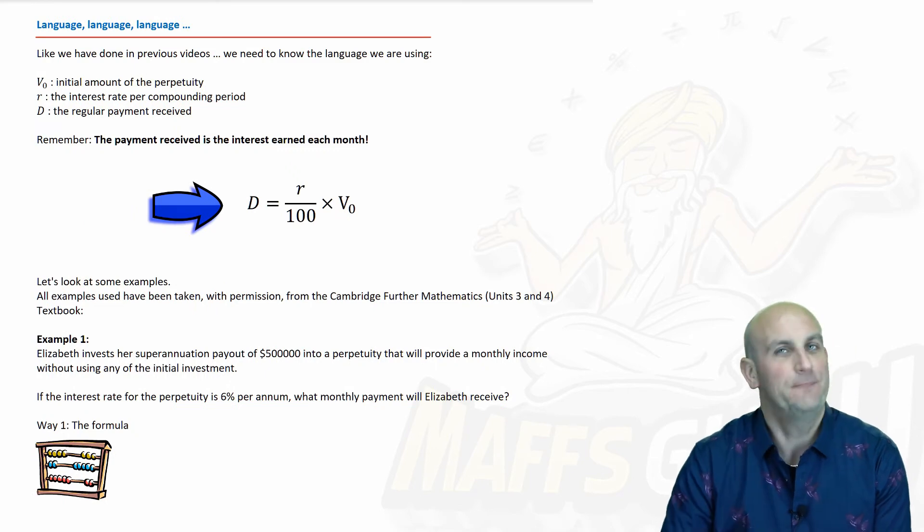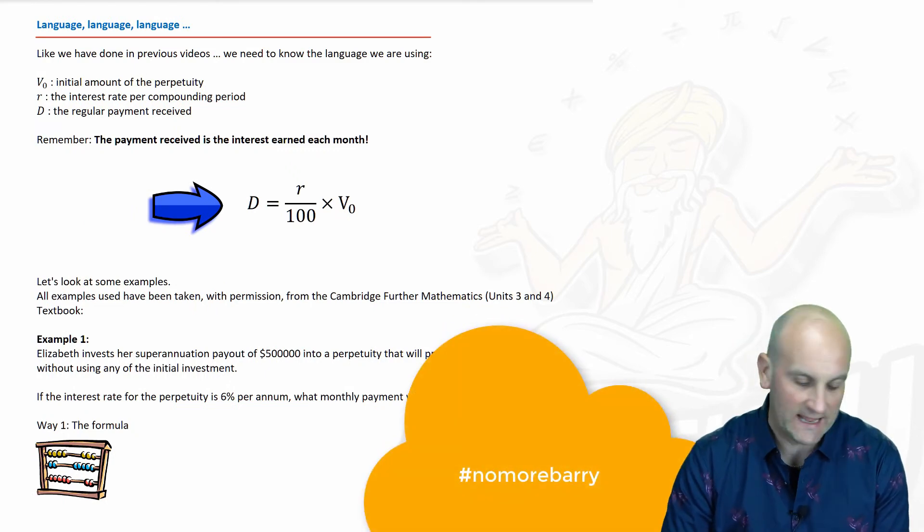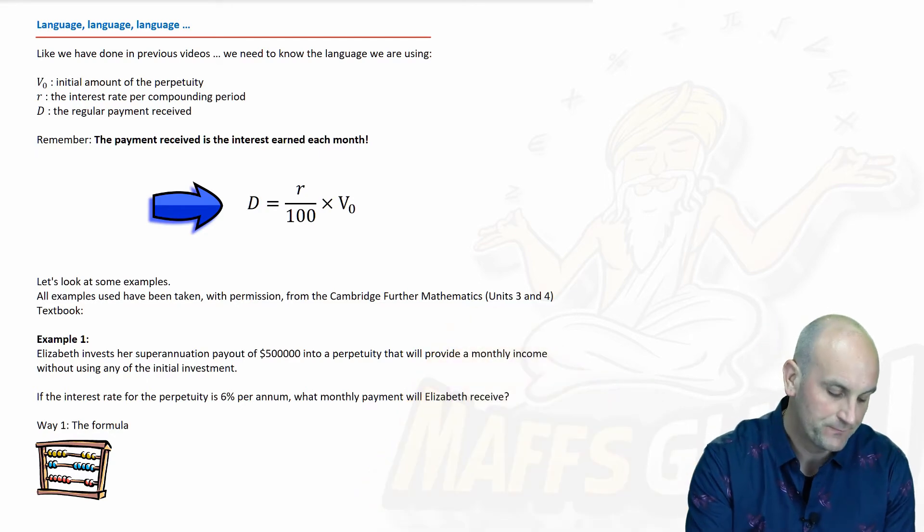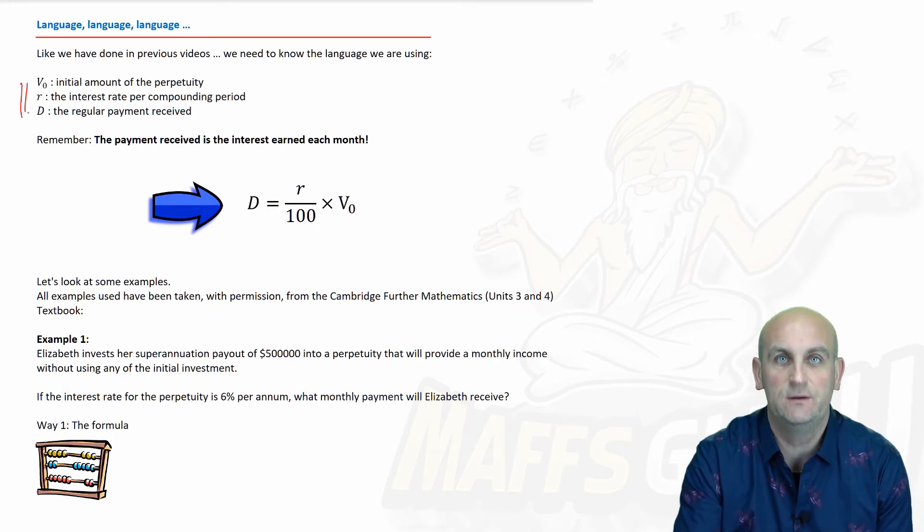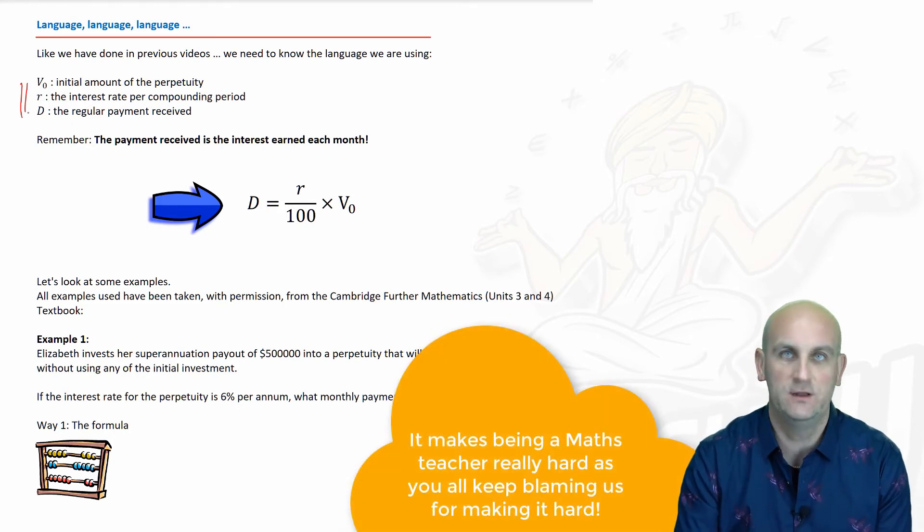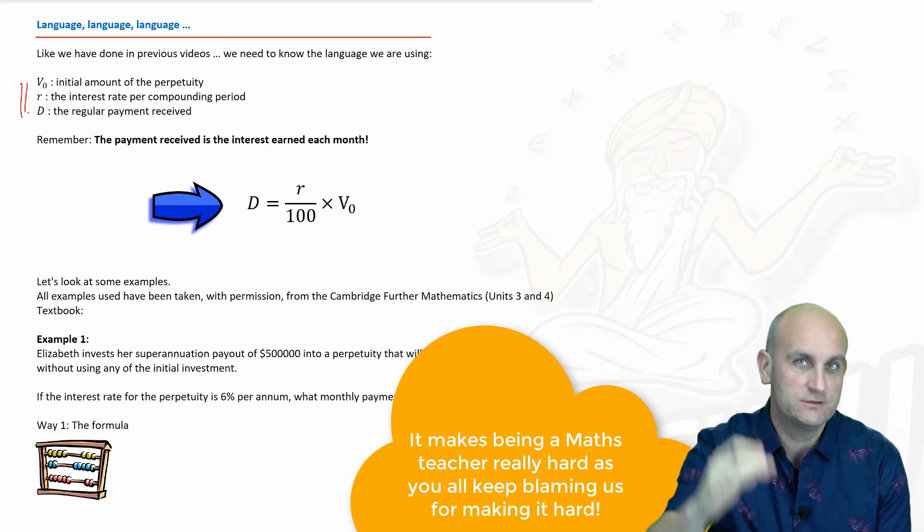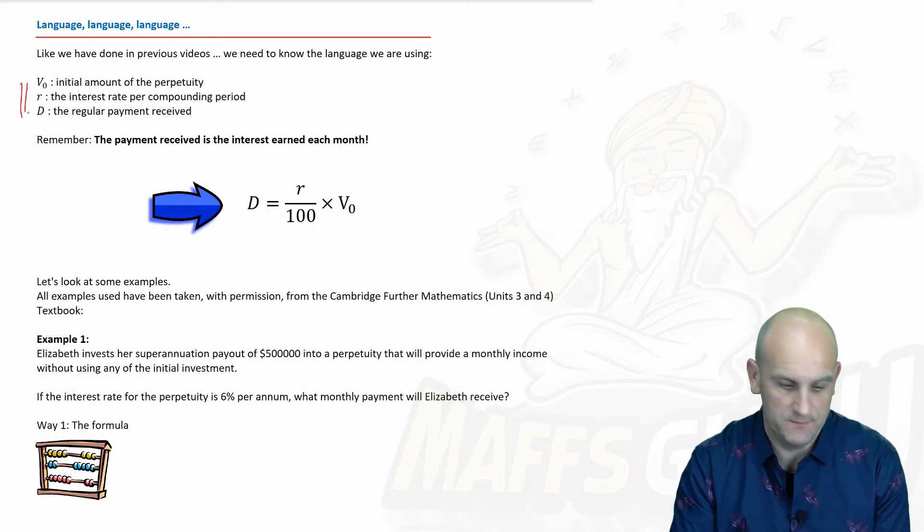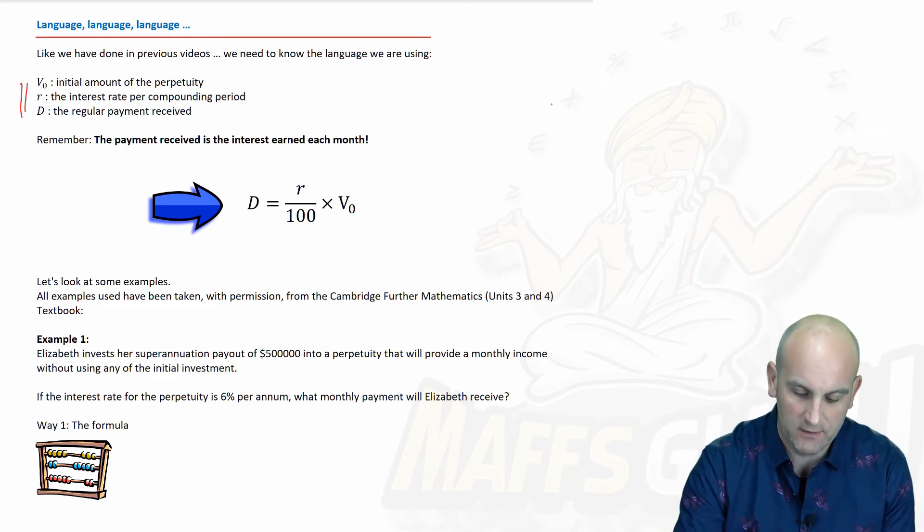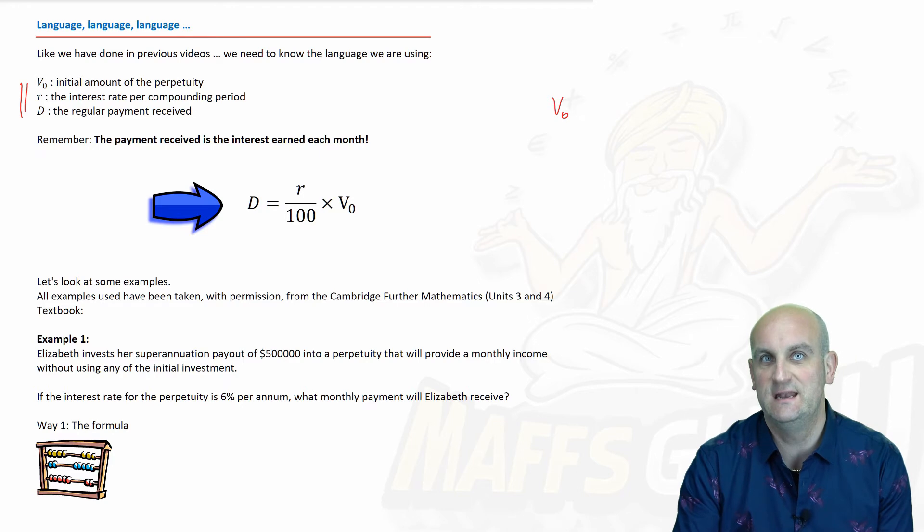Barry, we're at it again—language, language, and language. As I've done in previous videos, let's look at the language you're using. V0, and sadly a lot of maths confuses people because of the language. If you're allowed to have a summary book, this is the stuff you put in. Make sure you know which formula to use and when. V0—that's the amount we're investing, the initial amount in our perpetuity and as it turns out our final amount in our perpetuity.